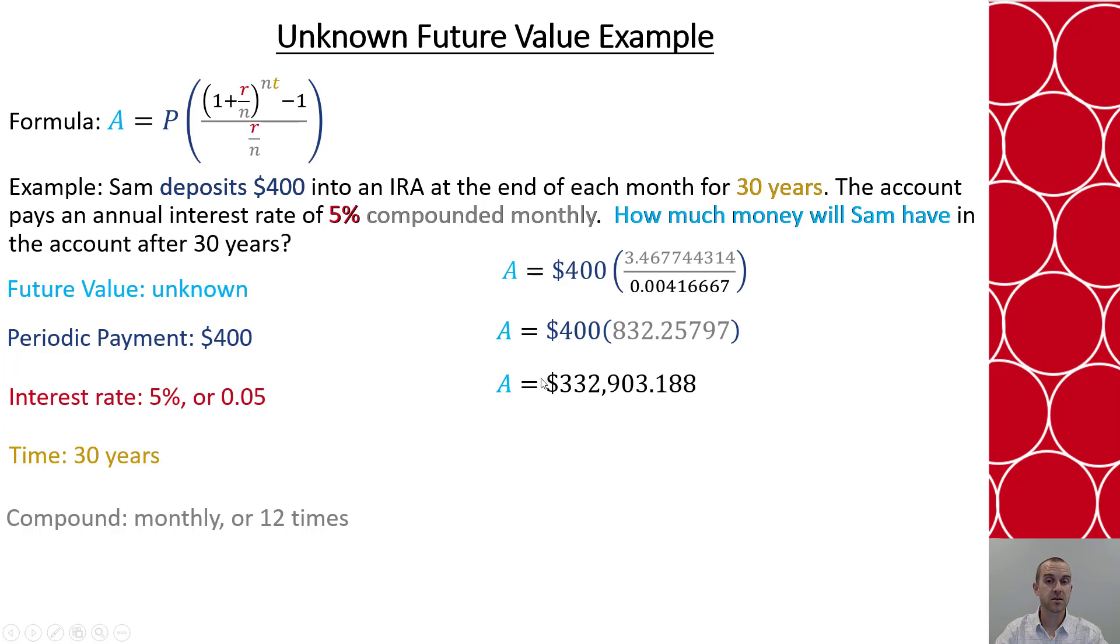And now we can multiply that by the $400, and see that in this account if Sam puts $400 in every month, after 30 years they'll have $332,903.19, because we want to round to the hundredth. So that's why it's important that when we set up our retirements that we start early and invest whatever we can, because it can build up very quickly.